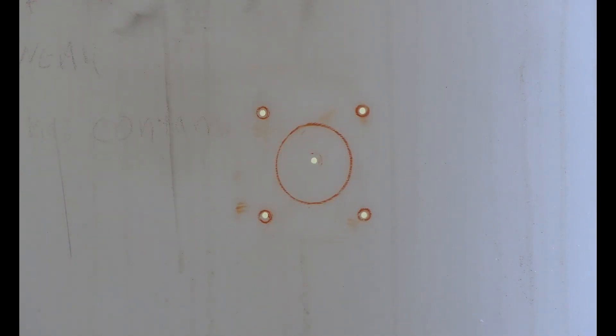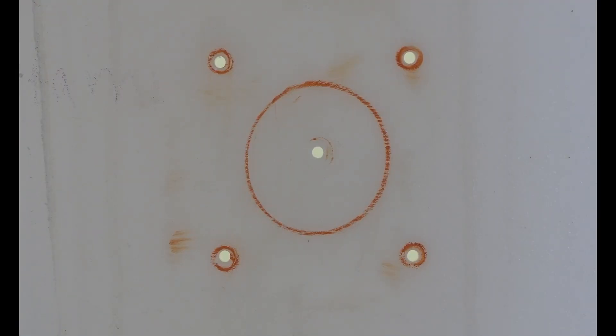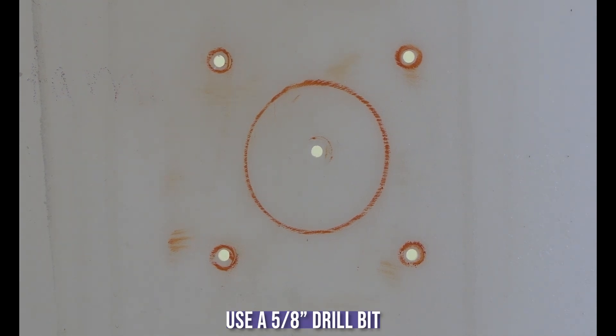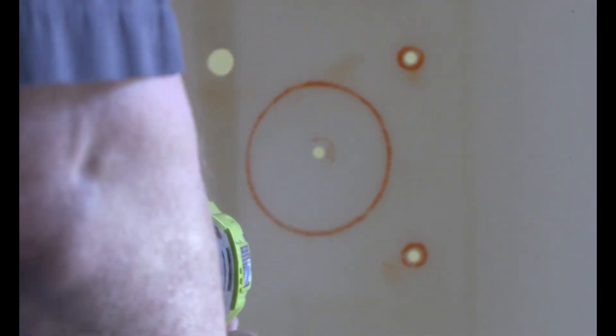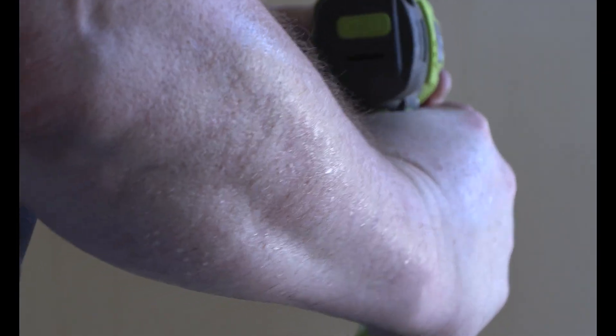Once you've got them piloted, the next step is take a 5/8 drill bit and drill out your bolt holes. You want to do a clean cut so you don't leave any burrs.